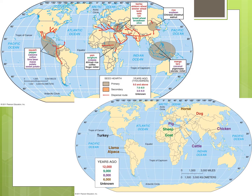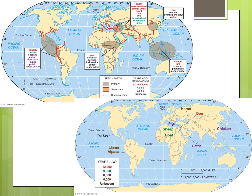So where did this all begin? Carl Sauer, a leading expert on the origins of agriculture, believed that plant domestication occurred in multiple regions of great biodiversity, where many different kinds of wild plants grew. Most geographers now agree that there were several independent hearths of agriculture, where people domesticated plants and animals that were local to their region. There are generally five or six independent hearths.